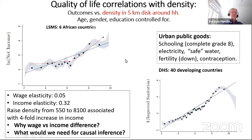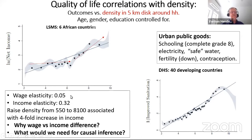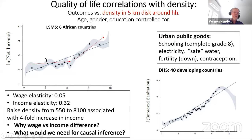Here are the good sides of cities. This graph shows incomes from the LSMS for six African countries covering about 400 million people. We have a wage elasticity of 0.05 with respect to density and an income elasticity that is much, much higher. The data shows what looks like two distinct parts: a low slope at lower densities and then a very fast rise, so that going from 55 to 80–100 people per square kilometer, you get roughly a fourfold increase in income.